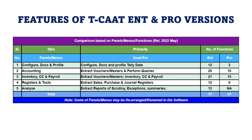Looking at the comparative features of TCAT Enterprise and the Pro version: in TCAT Pro, you have three key functions in the configure/profile menu. In accounting, there are 10 functions in Pro versus 20 in Enterprise. For inventory, cost center, and payroll modules, there are 15 functions in Pro versus 21 in Enterprise. In registers and tools, there are 9 in Pro versus 12 in Enterprise.